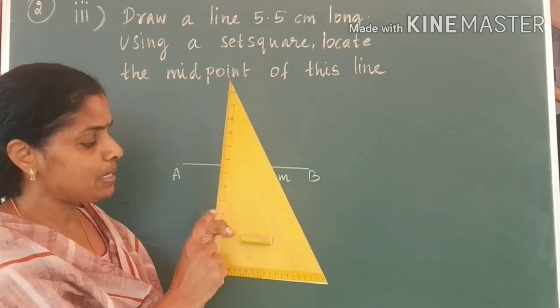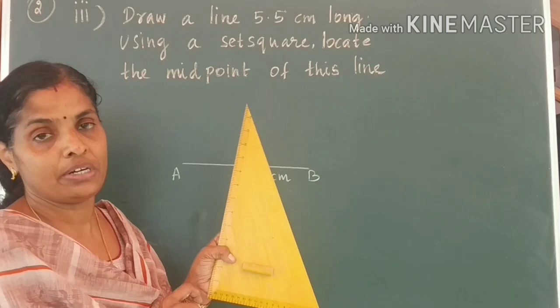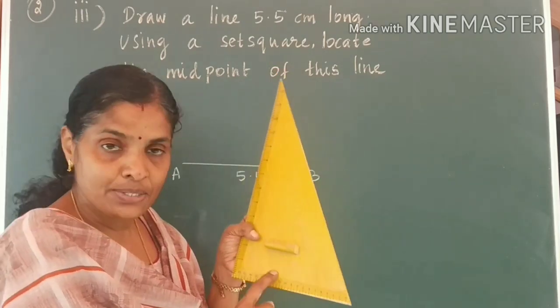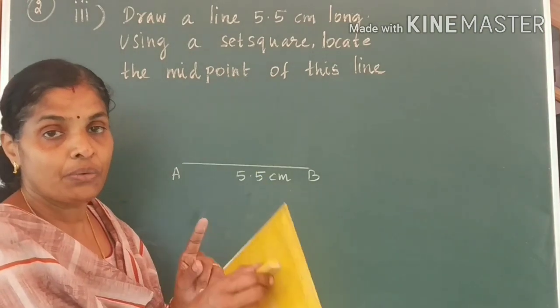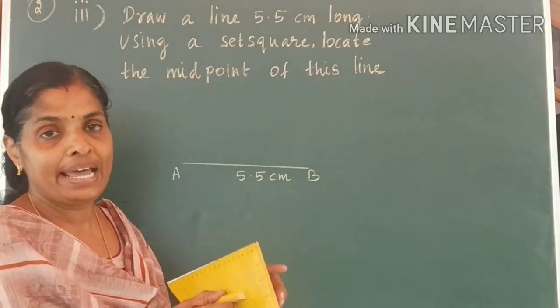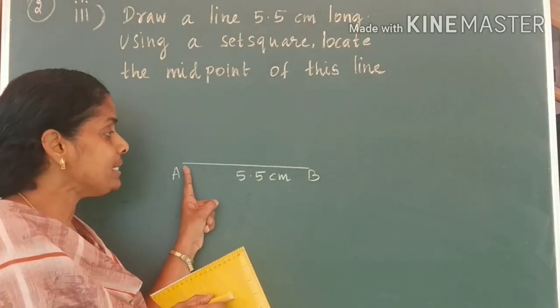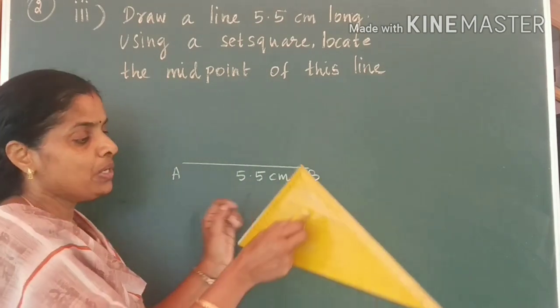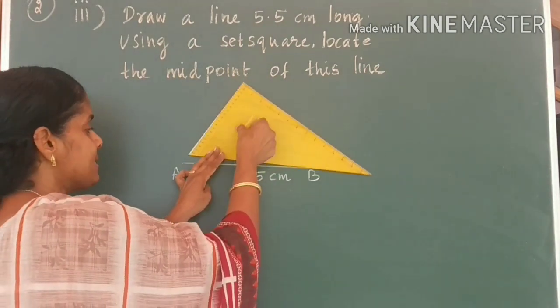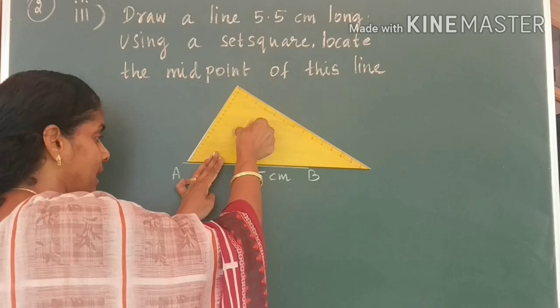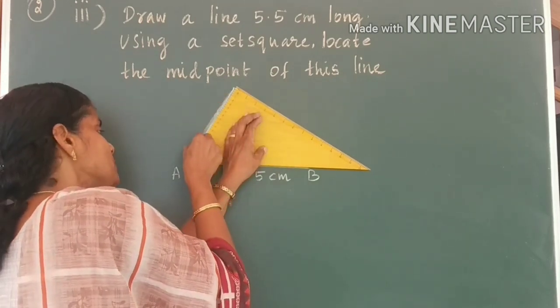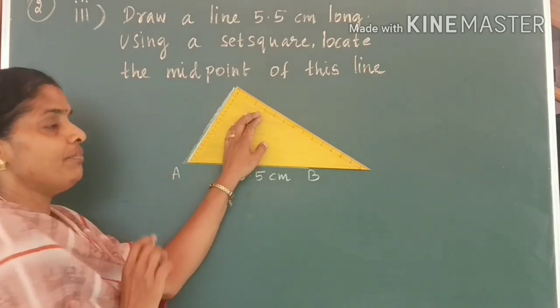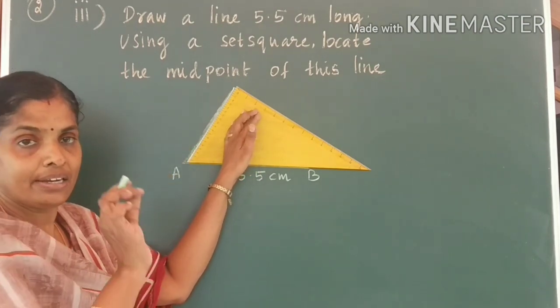You have a similar set square in your instrument box also. Use your set square from your instrument box to draw two equal and parallel lines at the points A and B. I am keeping the set square at the point A and I am going to draw a line. Using set square, I have drawn the full length.